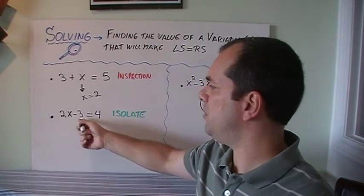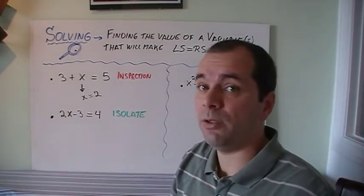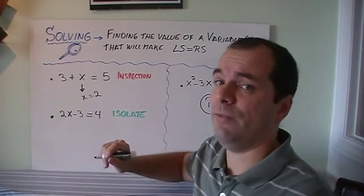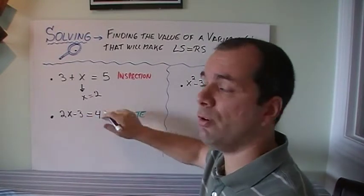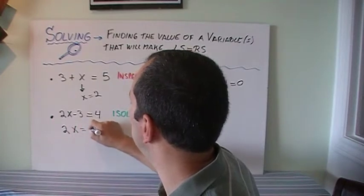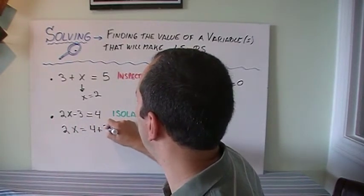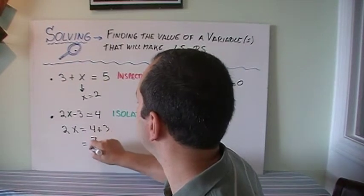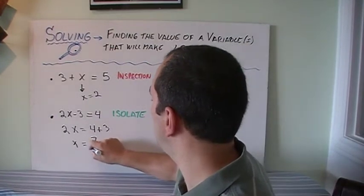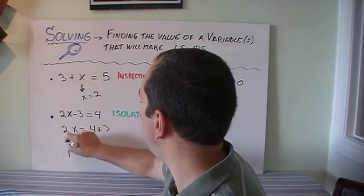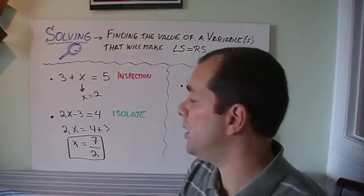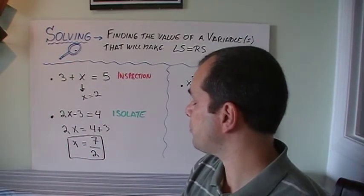If I got something like 2x minus 3 equals 4, I may not be able to look at this by inspection. So maybe what I'm going to do is isolate. I'm going to move things over, so 2x equals 4 plus 3, that gives us 7. Then this 2 that's multiplying goes to the other side dividing, and we end up that x equals 7 over 2, which was harder to see by inspection.